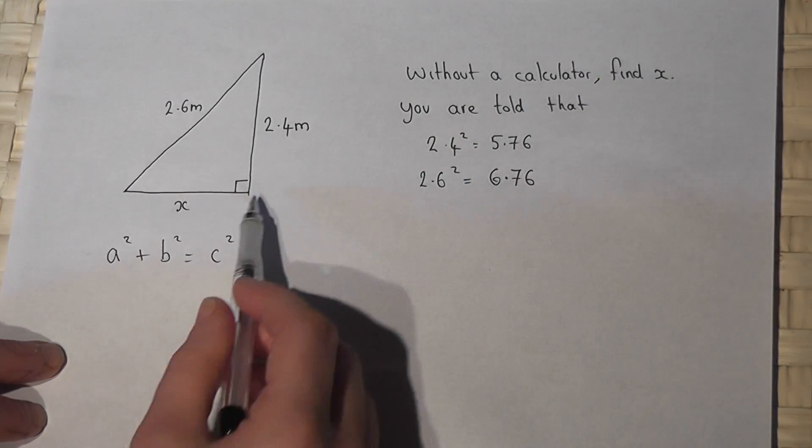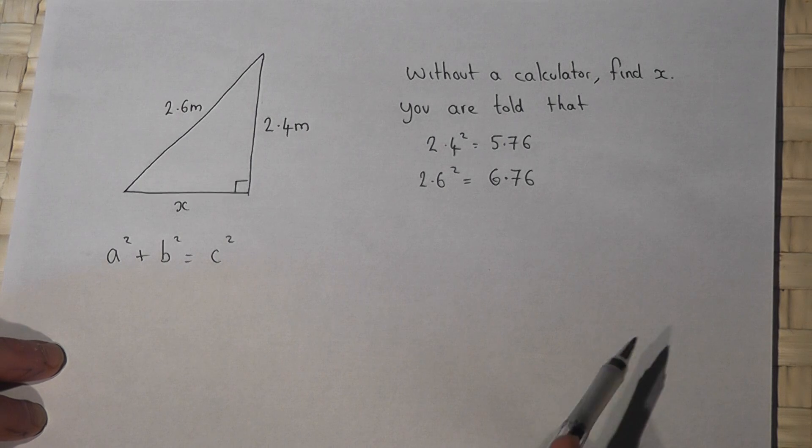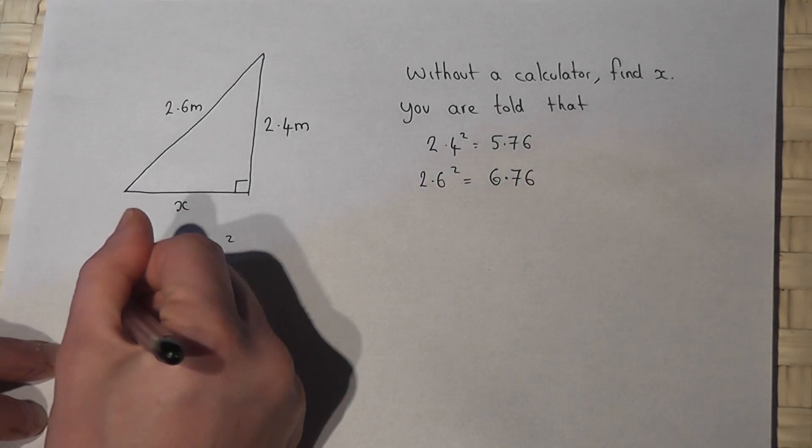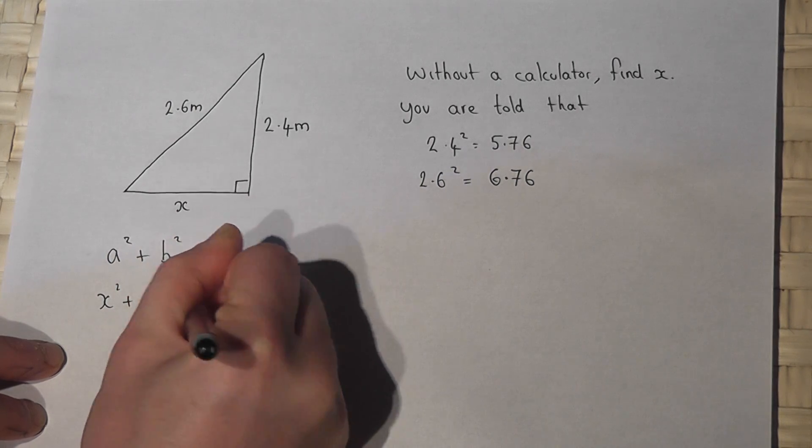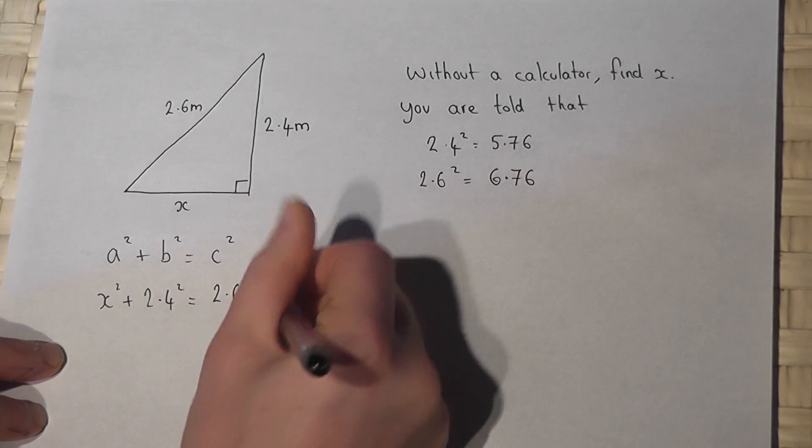So in this case, x squared plus 2.4 squared must equal 2.6 squared.